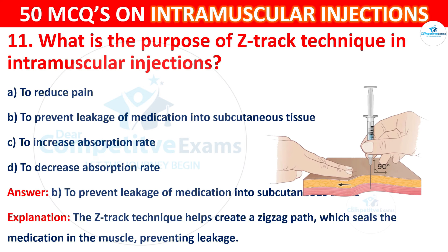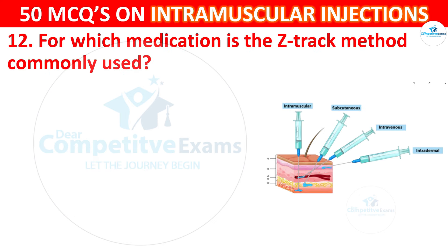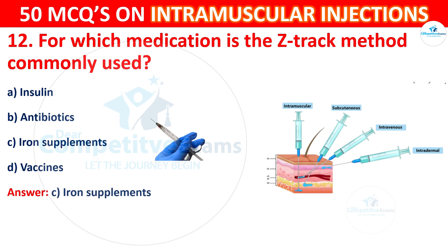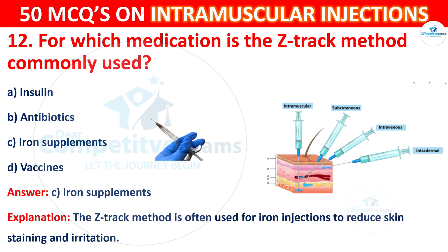Question 12: For which medication is the Z-Track method commonly used? Options are: insulin, antibiotics, iron supplements, or vaccines. The correct answer is C, iron supplements. The Z-Track method is often used for iron injections to reduce skin staining and irritation.